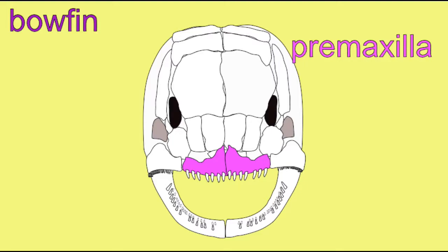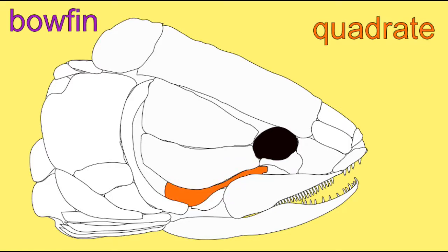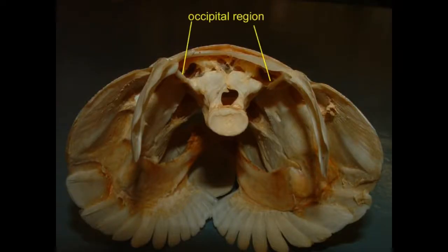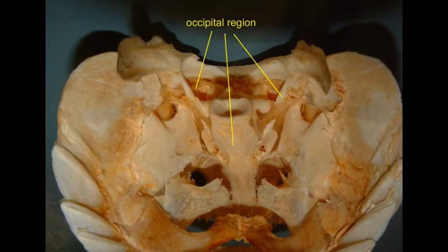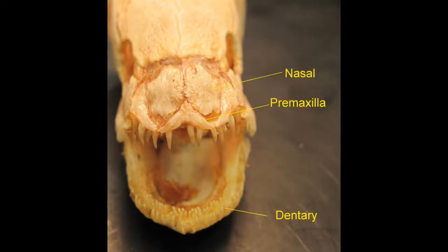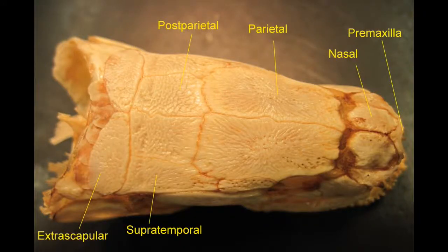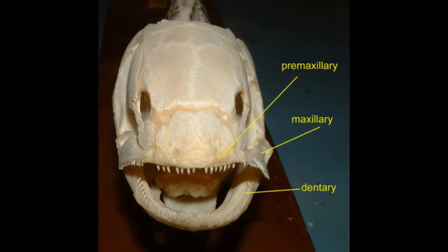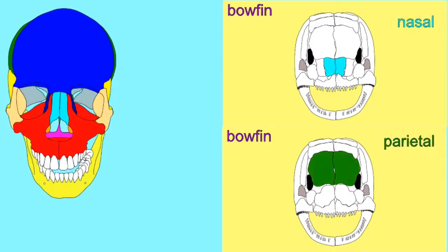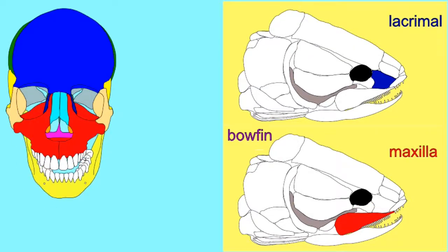There are other bony elements which in humans are not separate bones, but components of the occipital bone or the sphenoid bone. And so, the bowfin skull is significant because, as a primitive osteichthian, it is a representative of the early osteichthians which evolved the first identifiable homologs to the bones of the dermatocranium in the more advanced osteichthians alive today.